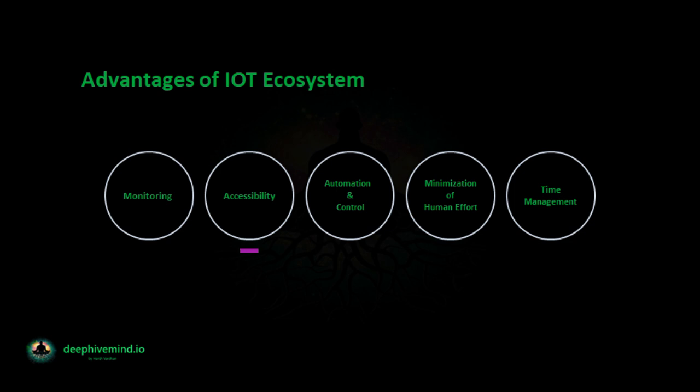Accessibility: IoT allows users to access real-time information about their devices from any part of the world. Users can connect to the application and gather information about their personal devices. For example, a person switches on the AC when they are close to home so the room can be cool before they enter.